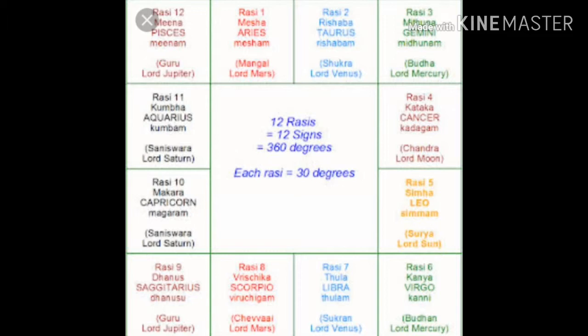The seven planets are Moon (Chandra), Mars (Mangal), Jupiter (Guru), Venus (Shukra), Sun (Surya), Mercury (Buddha), and Saturn (Shani). Apart from these, there are two nodes: Rahu and Ketu. Rahu and Ketu are not planets — they are points of intersection of the Moon's orbit with the Earth's orbit, points of intense darkness, known as nodes. These nodes have immense energy to alter a person's life. So in Vedic Astrology these are the nine planets: Sun, Moon, Mars, Jupiter, Venus, Mercury, Saturn, Rahu and Ketu.